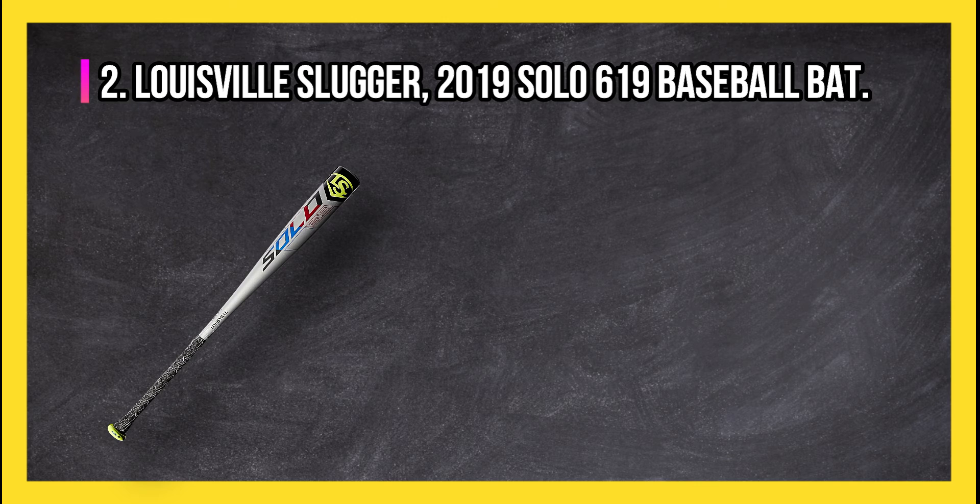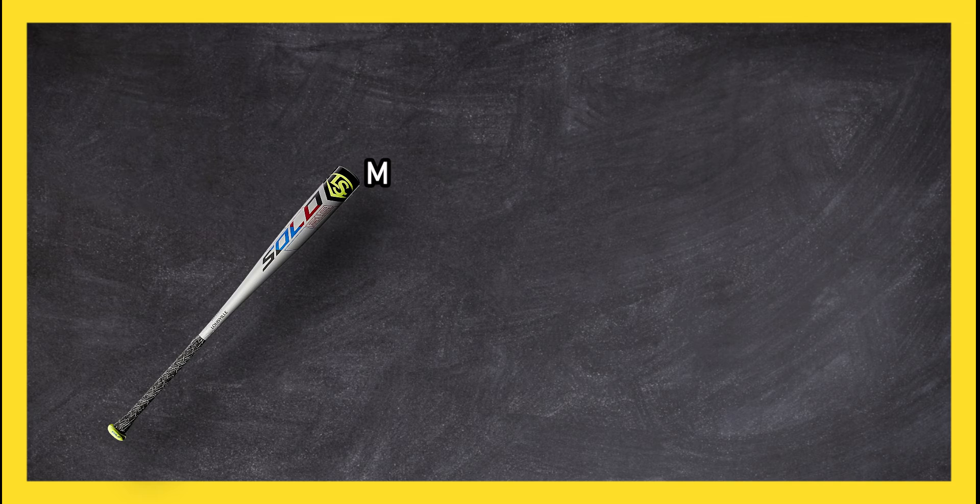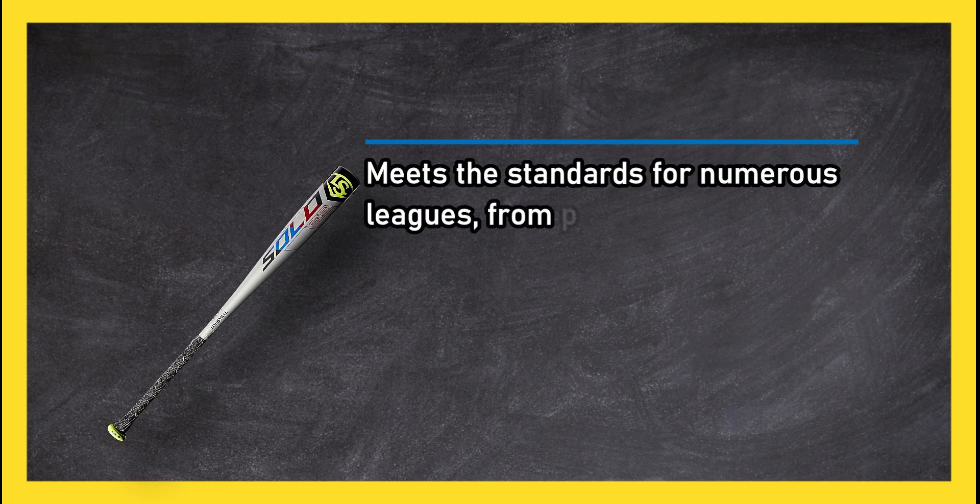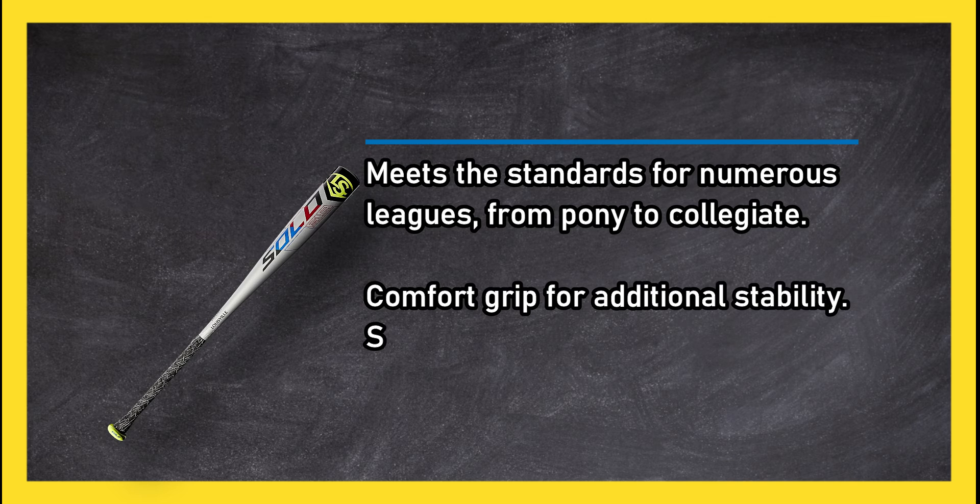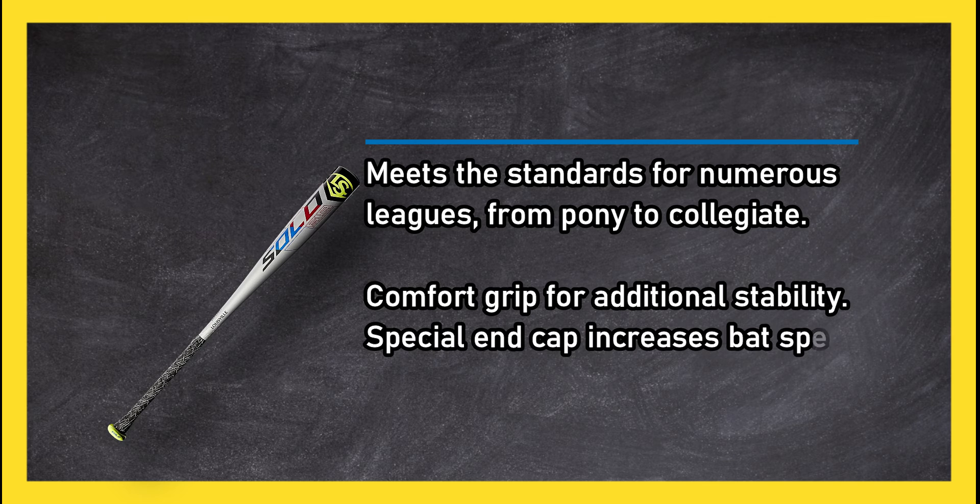At number two: Louisville Slugger 2019 Solo 619 baseball bat. Meets the standards for numerous leagues, from pony to collegiate. Comfort grip for additional stability, special end cap increases bat speed.